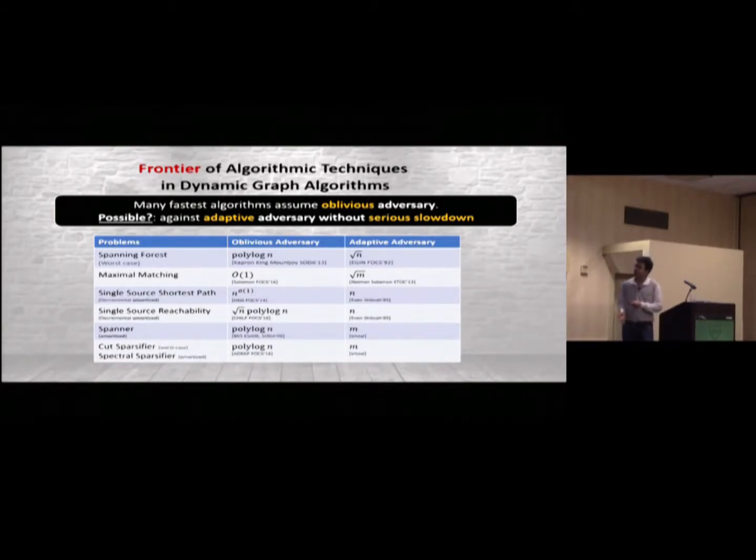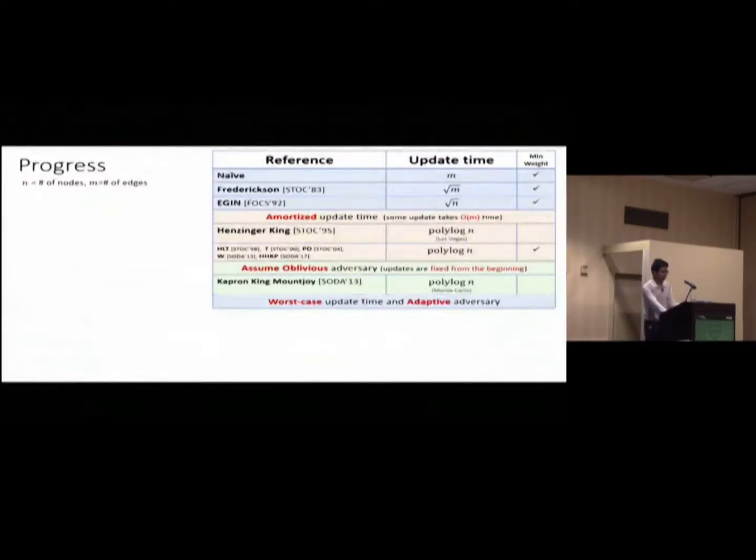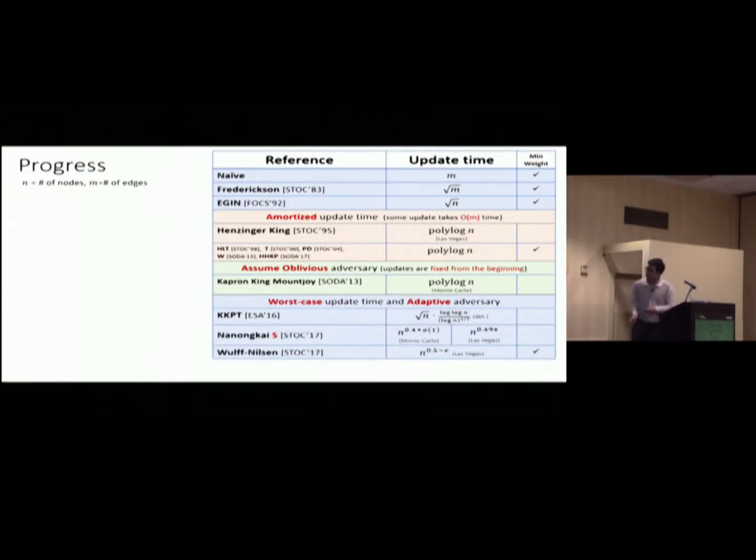So, spanning forest is just one of them. So, because of this phenomenon happens, so people really try to remove this assumption. And we can improve this a bit. And me and Danupon and Christian Wulff-Nilsen, this talk, we managed to get a first polynomial improvement over root n bound here, without assuming oblivious adversary. And in this talk, basically, once we, these two works are independent, and once we know that we are working on the same thing, we combine forces, and basically we bring this down to n to the little o of one.